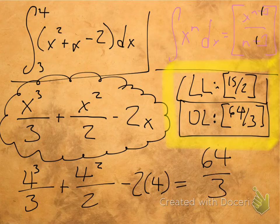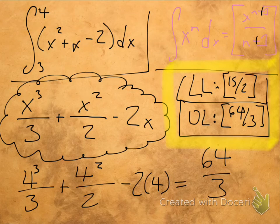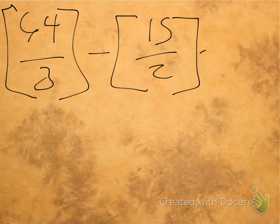So let's do that now. So we have our upper limit we said was 64 over 3. So we're just going to have 64 over 3 minus, I think it was 15 over 2. Is that correct? Yep, 15 over 2. And this is equal to 83 sixths.